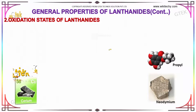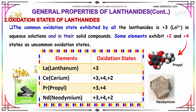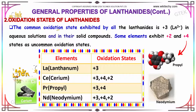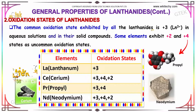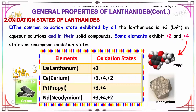If we talk about the general properties of lanthanides, the first one is the oxidation state. The common oxidation state exhibited by all the lanthanides is +3, in aqueous solution and in their solid compounds. Such elements also exhibit +2 and +4 states as uncommon oxidation states. Here are some important elements and their oxidation states — please make a note of it.